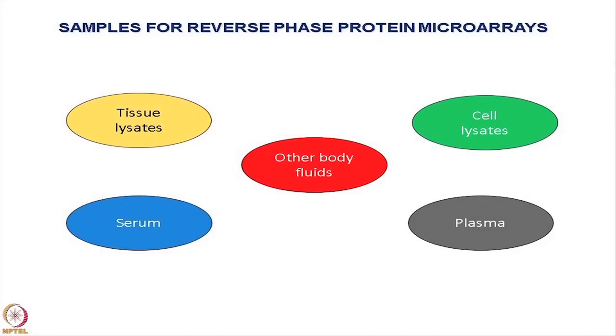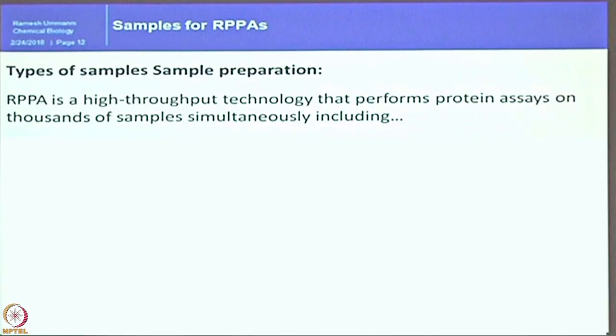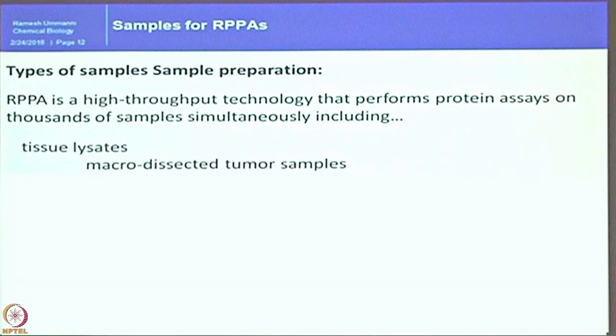First is samples. There is no limitation — any sample can be analyzed by RPMA, or any sample which can be analyzed by western blot can be analyzed in RPMA. You have to follow certain methods to prepare a clean sample to make it ready. RPMA is a high throughput technology that performs protein assays on thousands of samples simultaneously, including tissue lysates which have micro-dissected tumor samples — at least you will have a chance to get some microgram level proteins, some couple of milligram level proteins.